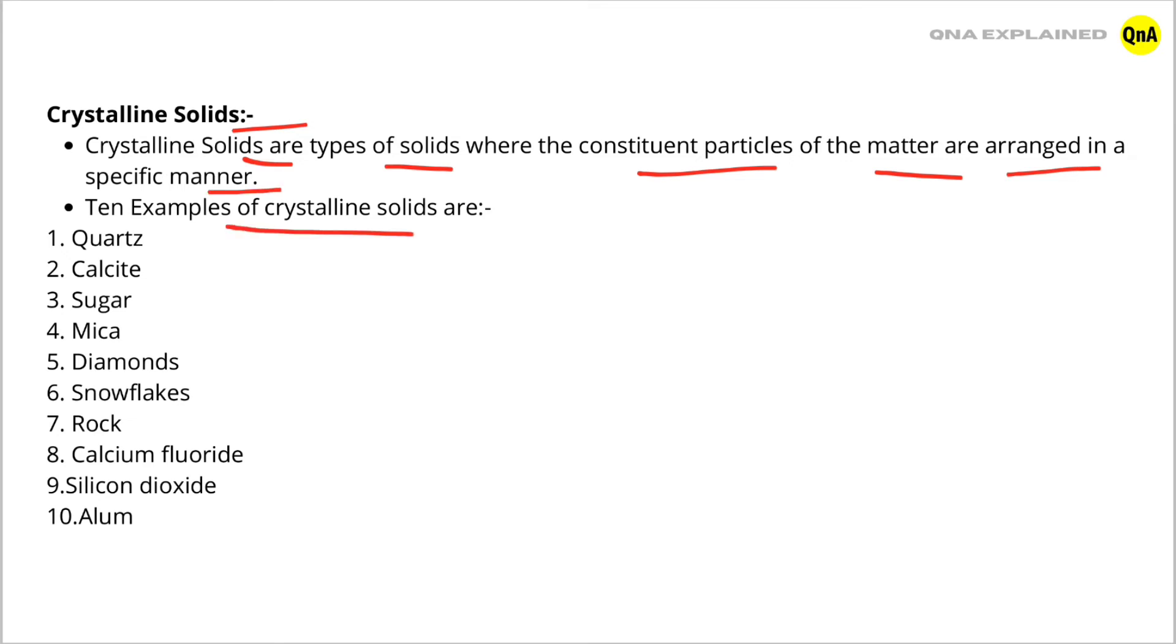10 examples of crystalline solids are quartz, calcite, sugar, mica, diamonds, snowflakes, rock, calcium fluoride, silicon dioxide, and alum.